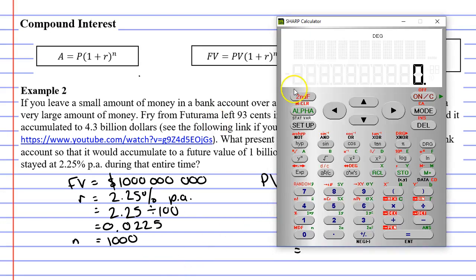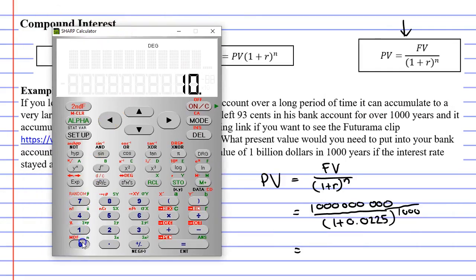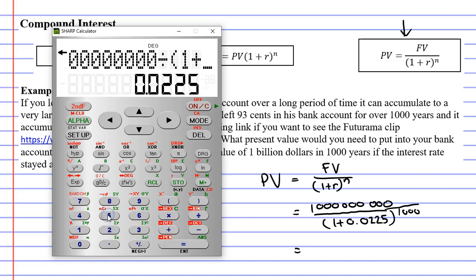Bringing up our calculator, we're going to type in 1 billion, which has nine zeros. And we're going to divide by, open our brackets up, 1 plus 0.0225. Close the brackets and put this to the power of 1,000. And what do we get? Only 22 cents.